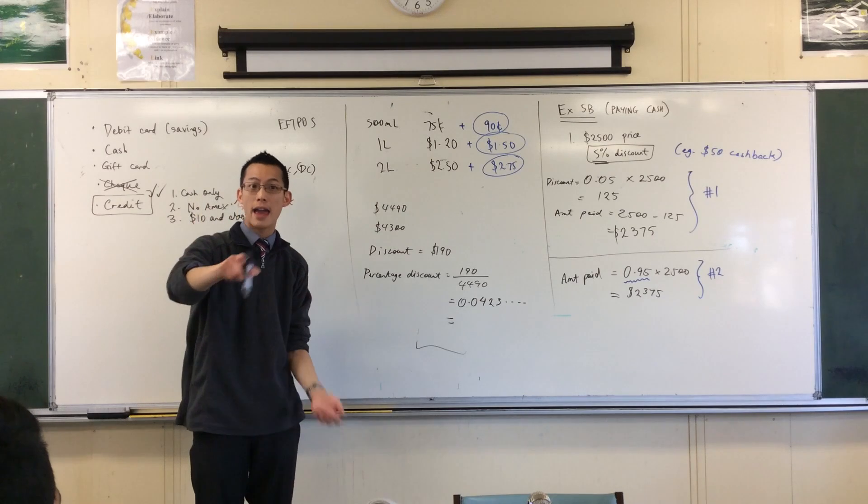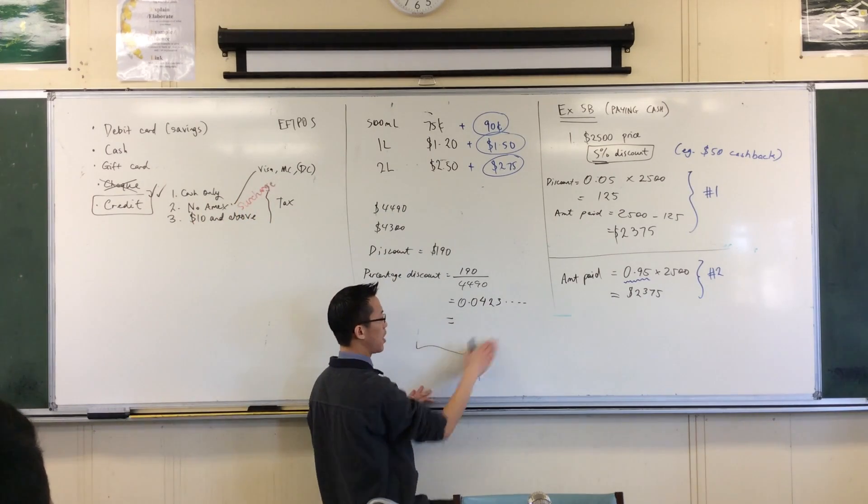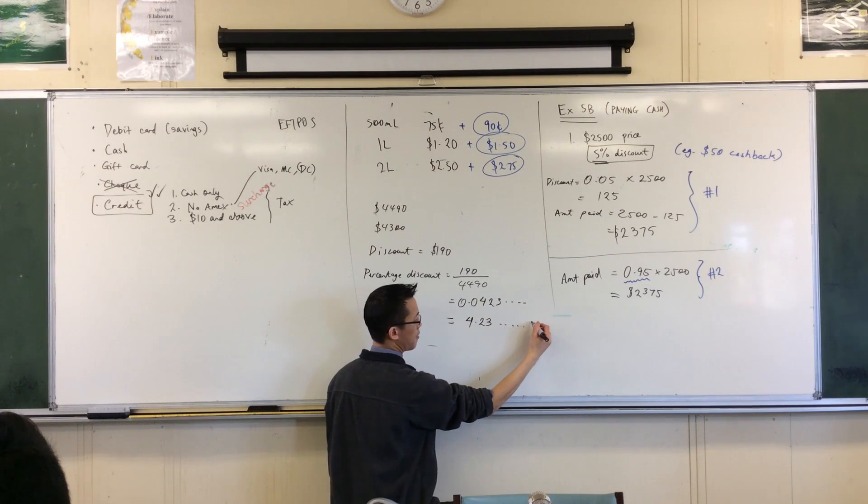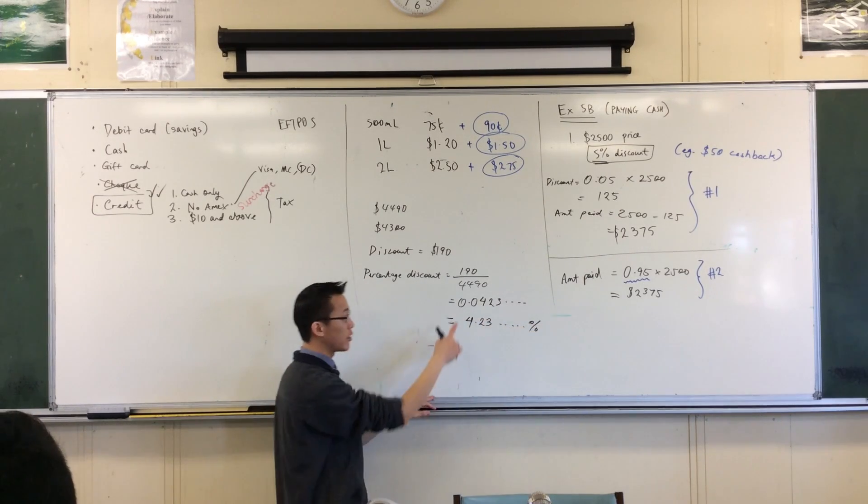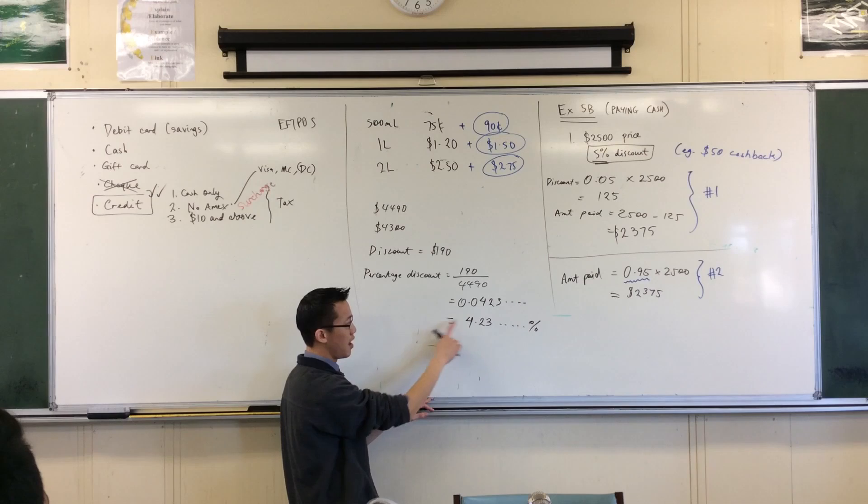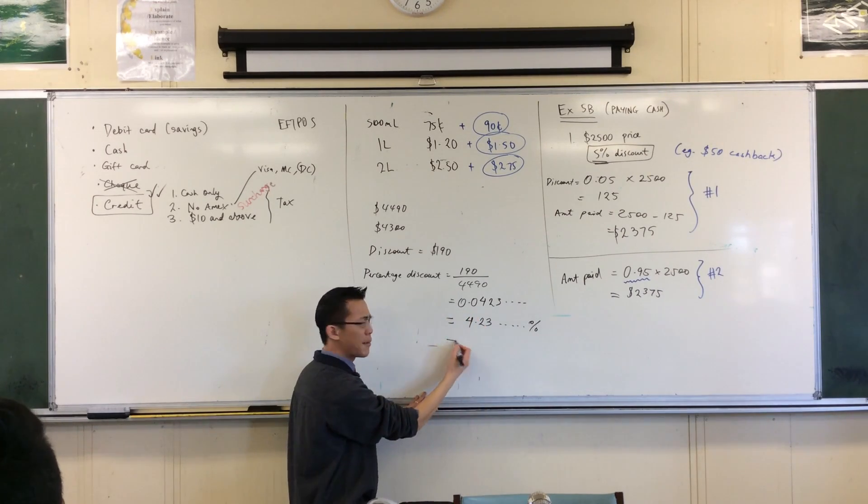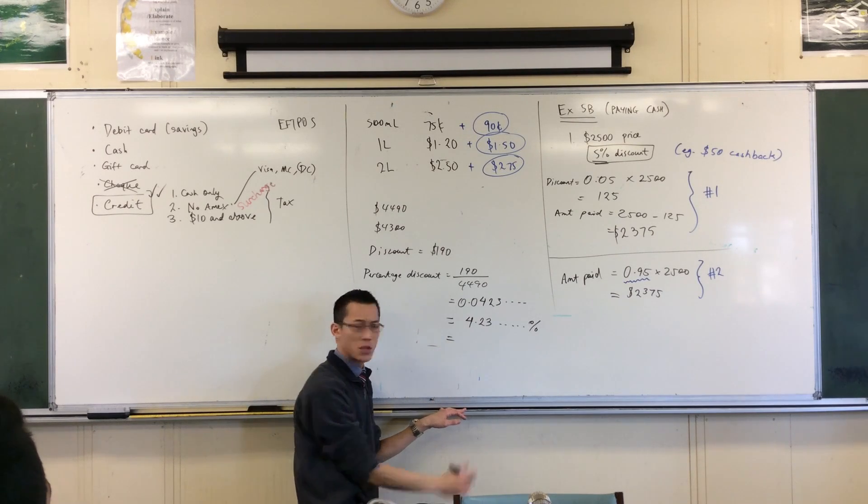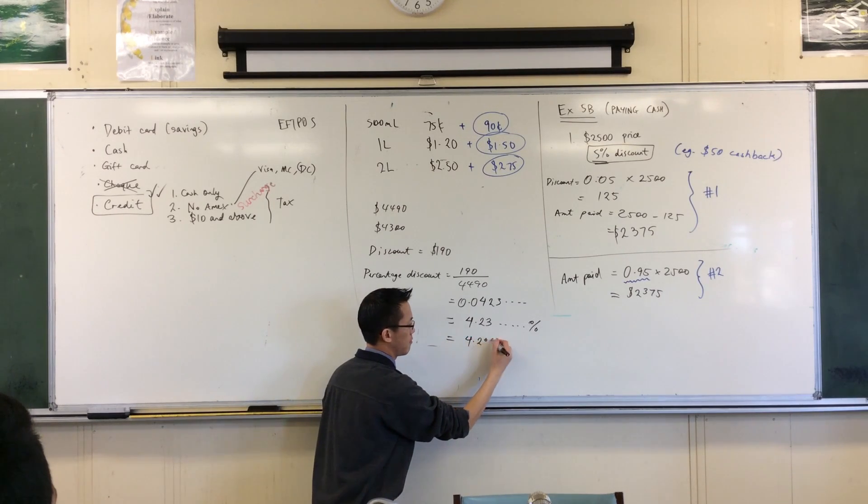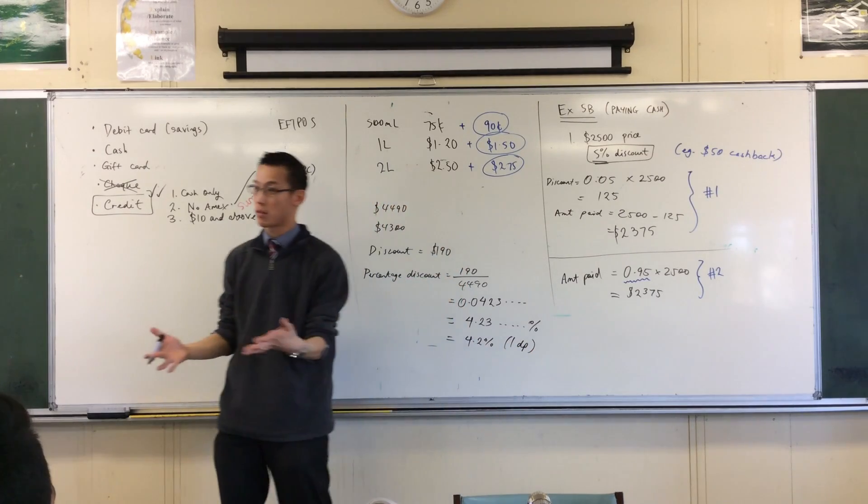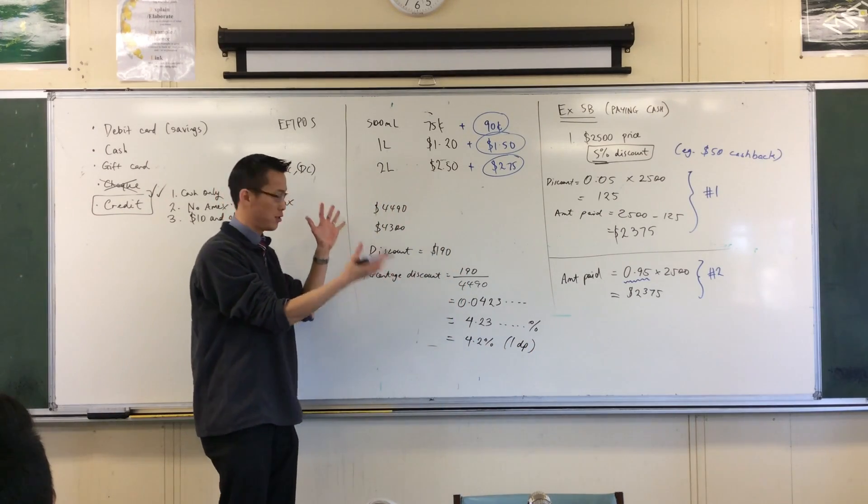So, how do I make it a percentage? I multiply by 100. So, this is going to become 4.23 blah, blah, blah percent. You see what the difference is between these two lines? I multiply by 100 to move the decimal point. But you whack the percentage sign on. How many decimal points did they want? One. Just the one. And whenever you approximate, you should say what level you approximate, what level of accuracy you approximate to.